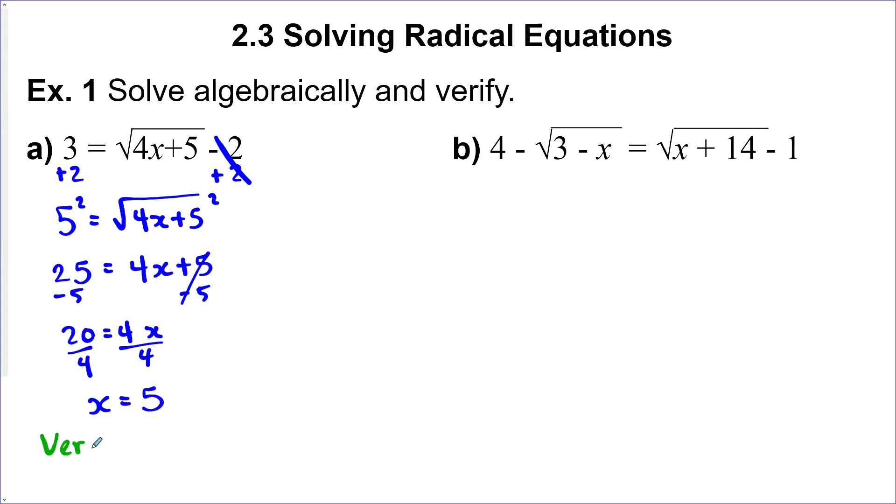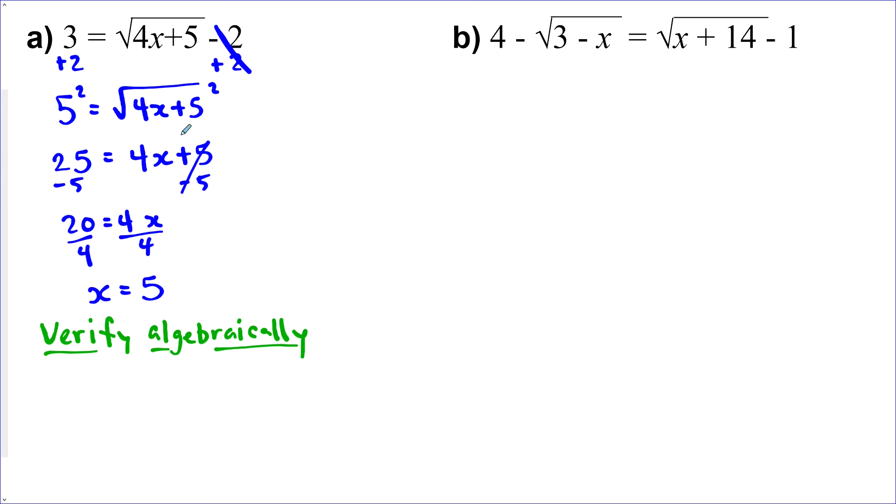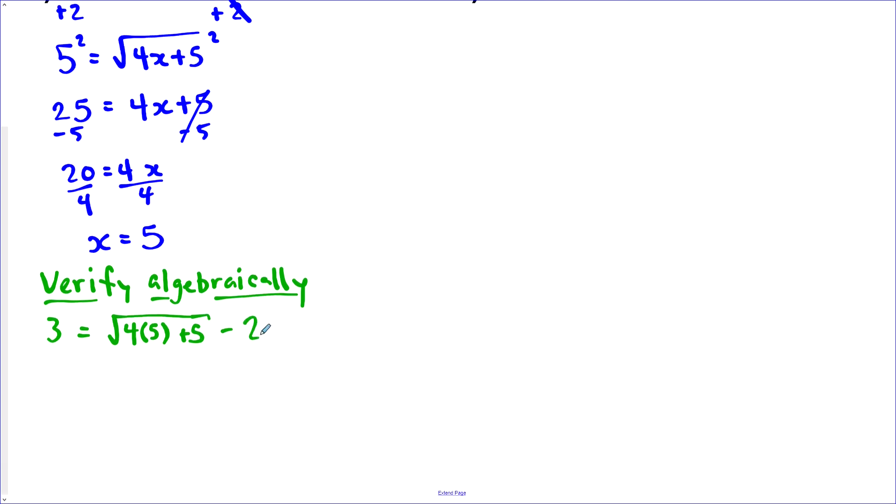Let's verify this one algebraically, which means I want to take the original equation before I've done any algebra and put in the answer that I found. So I'd have 3 is equal to the square root of 4, and replacing that x with 5, plus 5 minus 2. Whenever we verify, we want to keep each side to itself and simplify it. Make sure they're equal. So this would be 25, and then 3 is equal to 5 minus 2, which it is. So I can say 3 is equal to 3 and be confident in my solution here.